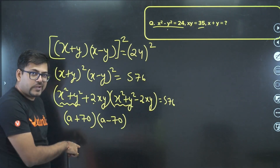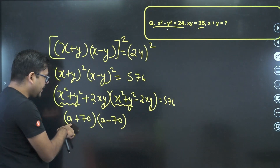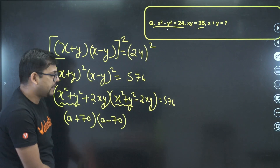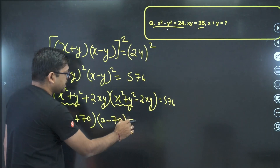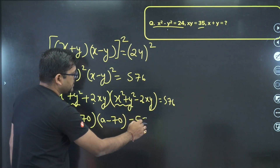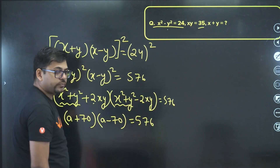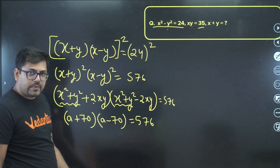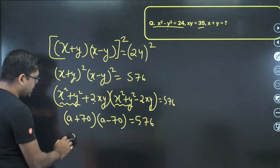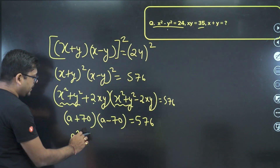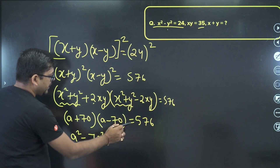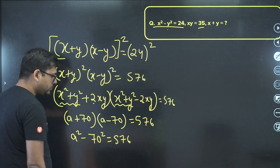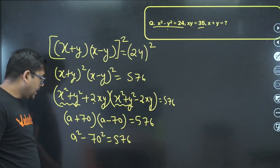I hope you can see that (a+70)(a−70) is again an a²−b² form, so that gives us a² minus 70² equals 576, which means a² minus 4900 equals 576.